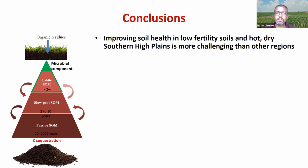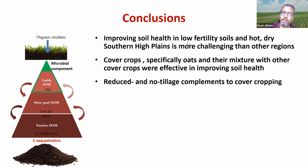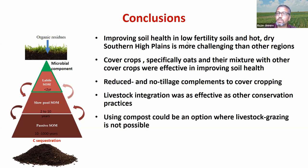Improving soil health is a challenge in a hot, dry, semi-arid environment — but it is not impossible. With cover cropping we have seen some improvement, specifically in Clovis where oats and their mixture with other cover crops were effective. Reducing tillage can complement cover cropping to maximize benefit. Having livestock is a blessing — it aids soil health and is sometimes as effective as other conservation practices. Using compost could be an option where livestock grazing is not possible, though we have seen that having cattle in the ground is more beneficial than just putting compost.